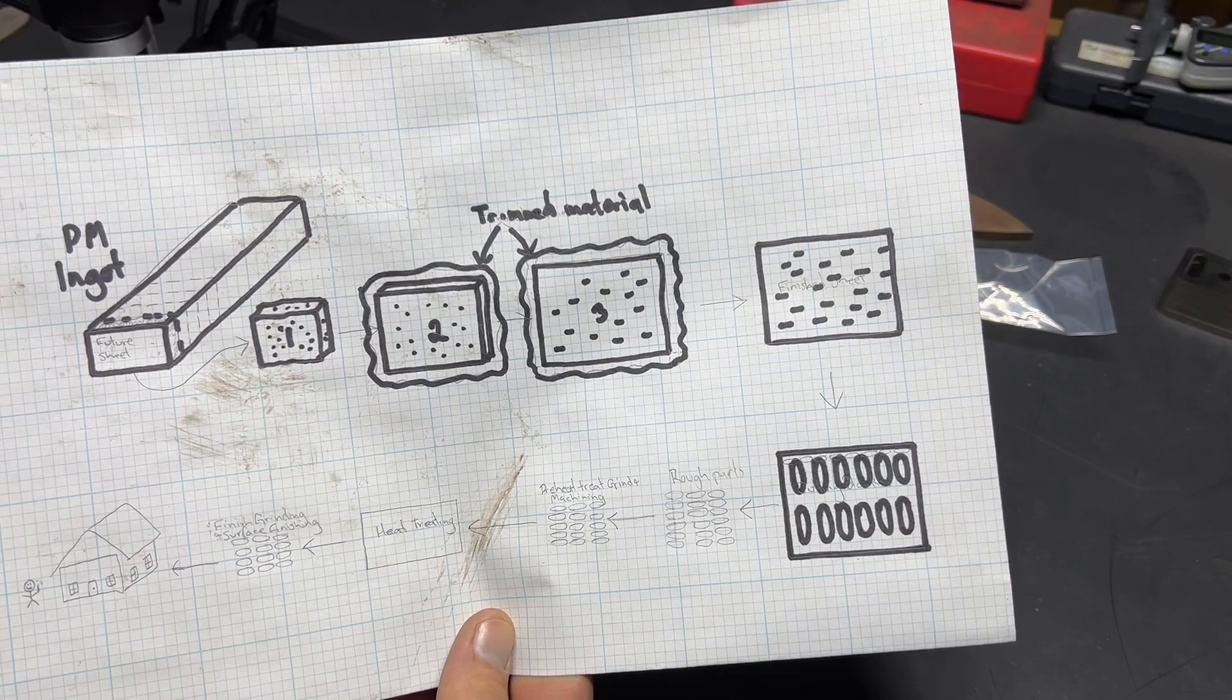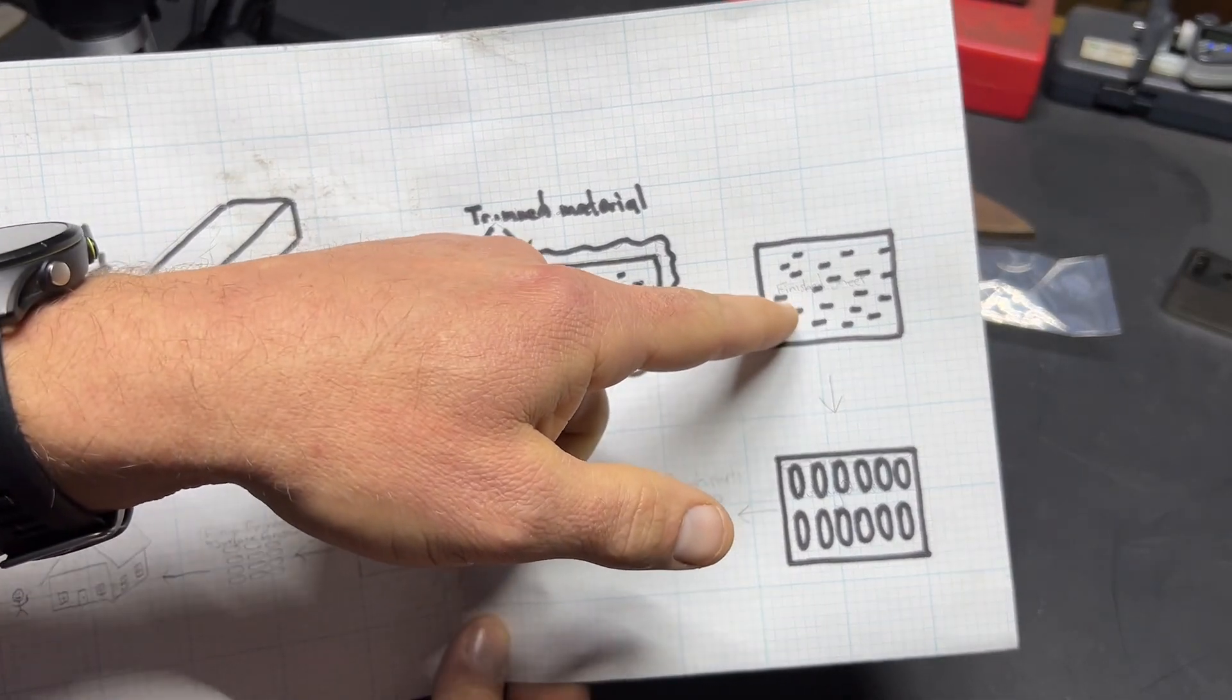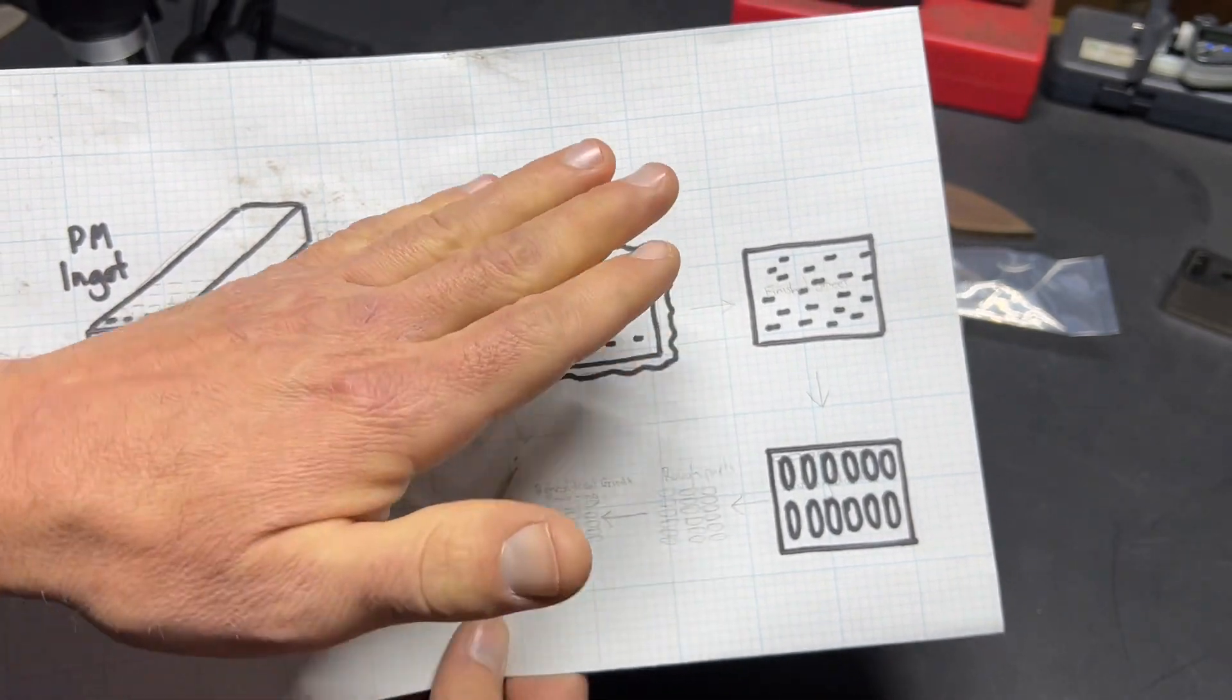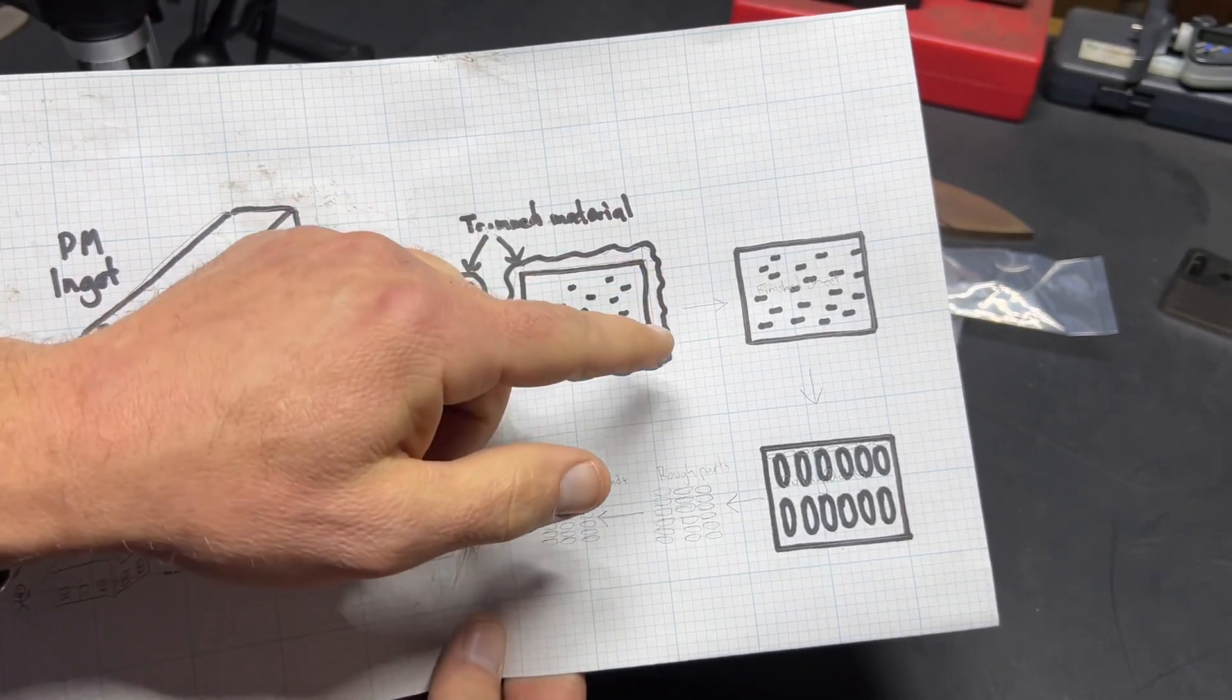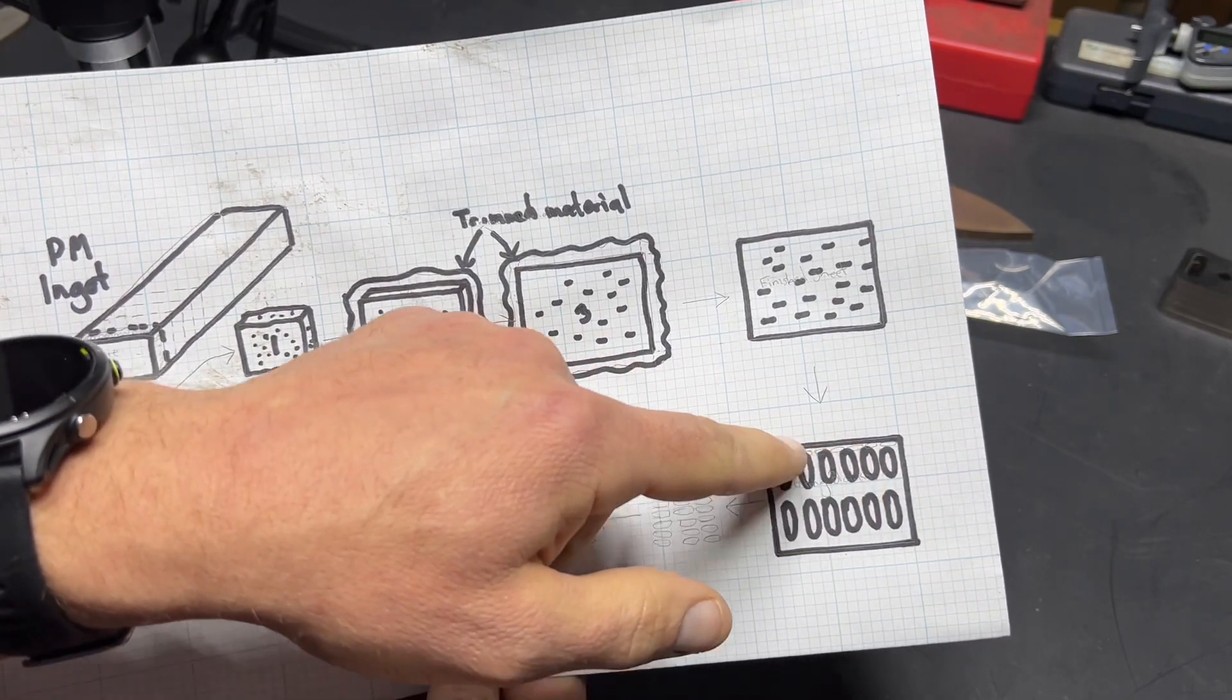If you go to my giant CPM voids video, you can see these void pockets that I'm running into on our blanchard grinders or getting through the material.